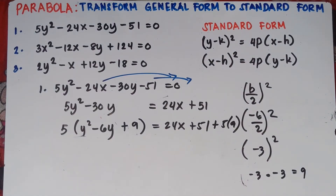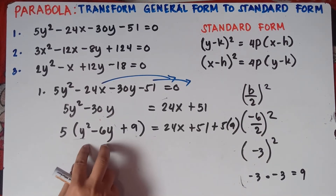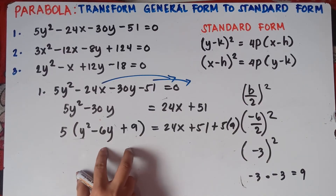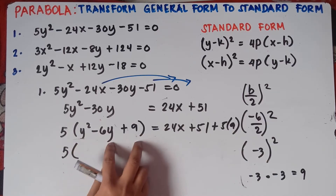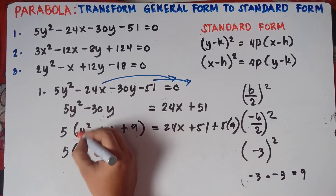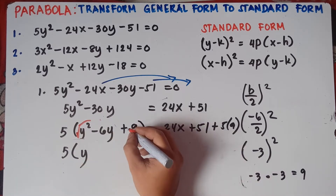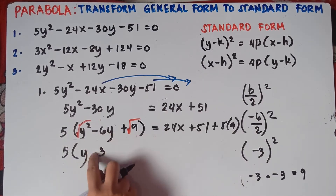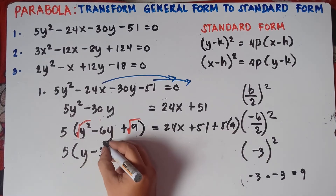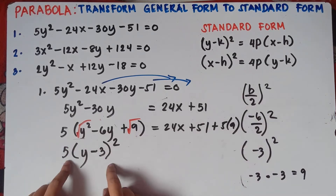Now make the perfect square trinomial into a squared binomial. Copy the 5 outside. Get the square root of the first term: square root of y squared is y. Get the square root of the last term: square root of 9 is 3. Copy the sign of the middle term, which is negative. So we get 5 times quantity y minus 3, squared.